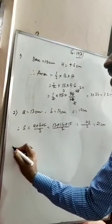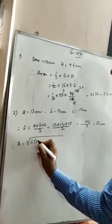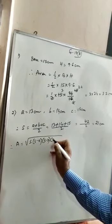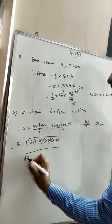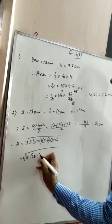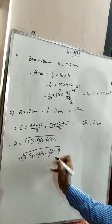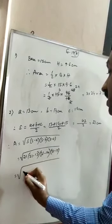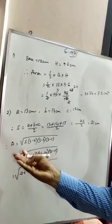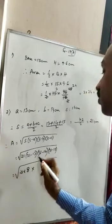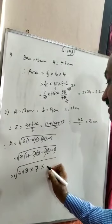Now we are going for finding out the area. Therefore, area equal to root over S into S minus A into S minus B into S minus C. That is equal to root over 21 into 21 minus 13 into 21 minus 14 into 21 minus 15, which gives root over 21 into 8 into 7 into 6.